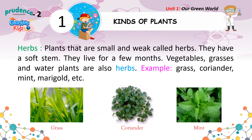Herbs: Plants that are small and delicate are called herbs. They have a soft stem. They live for a few months. Vegetables, grasses and water plants are also herbs. Examples: Grass, Coriander, Mint, Marigold, etc.